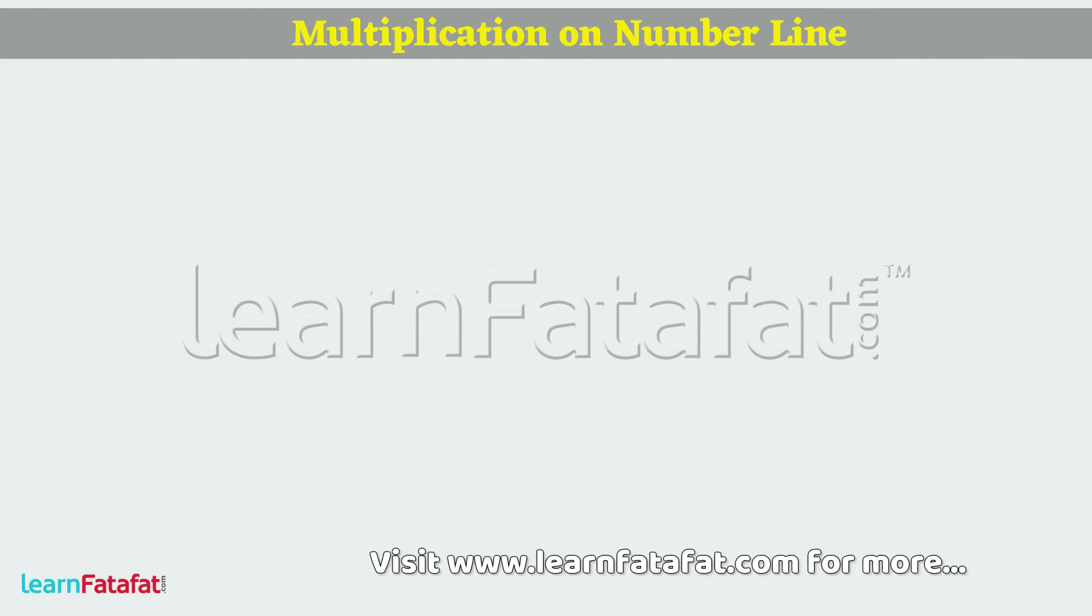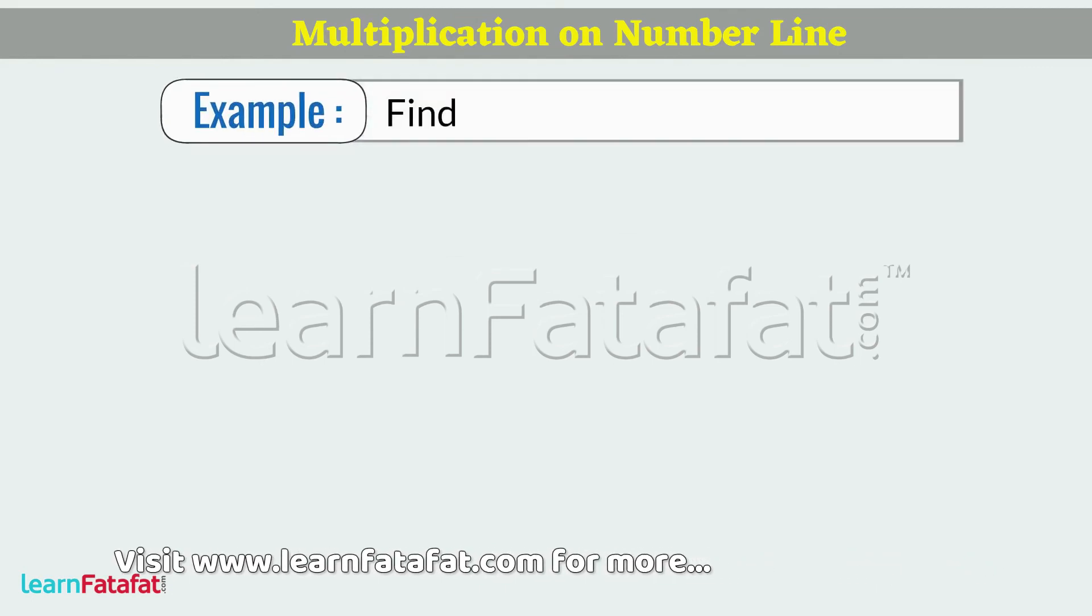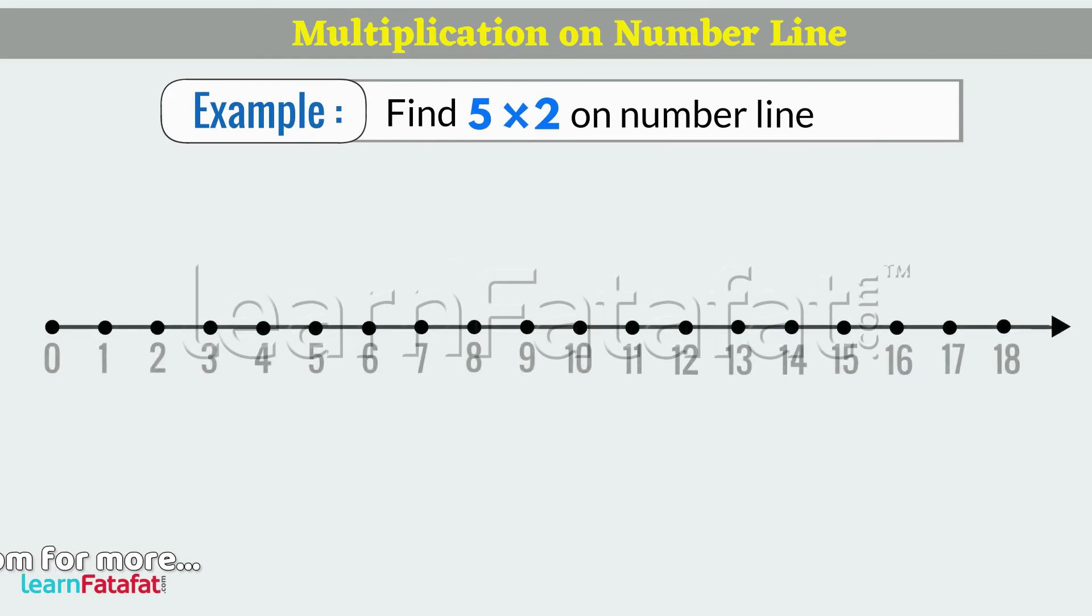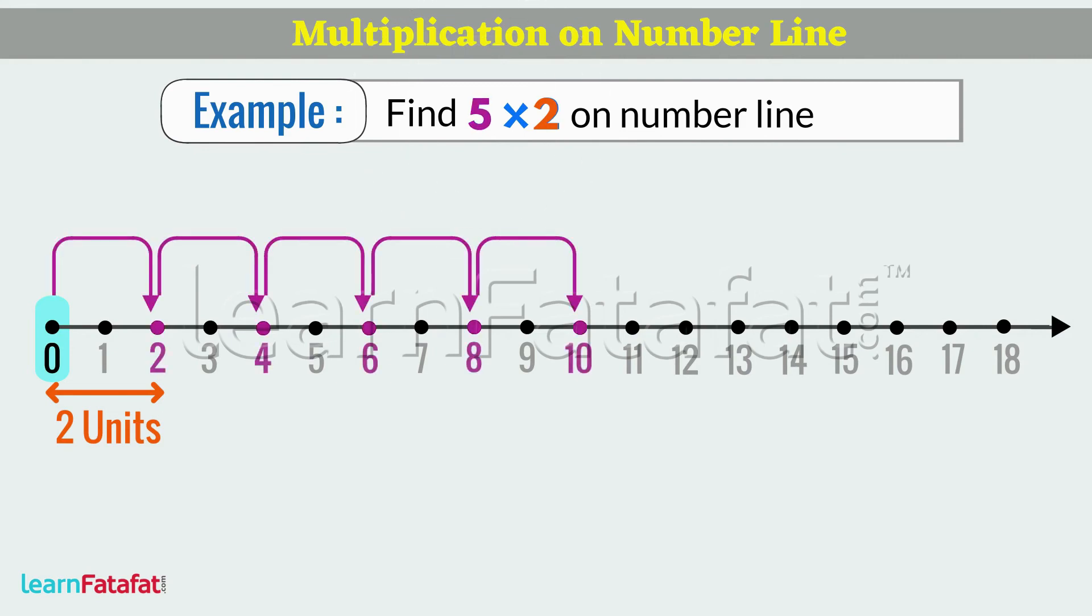Multiplication on Number Line. Example: find 5 multiplied by 2 on Number Line. Locate 0. Move 2 units at a time to the right and make 5 jumps. The tip of the last jump gives the answer. That is, 10.